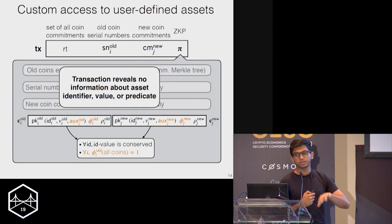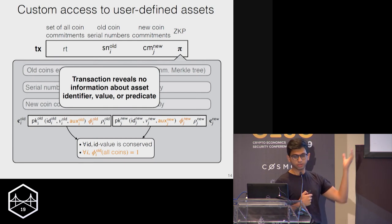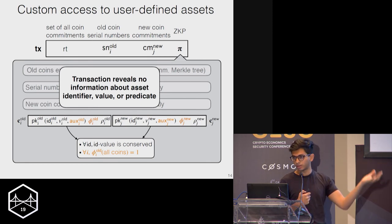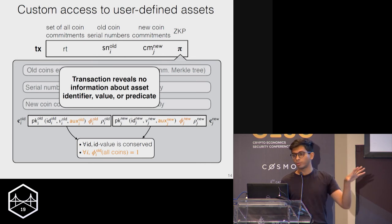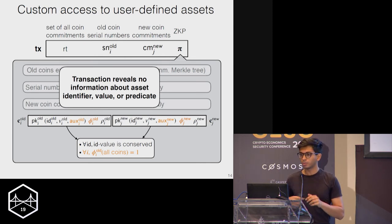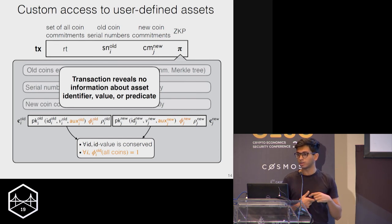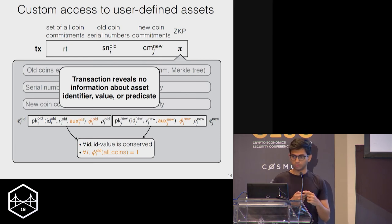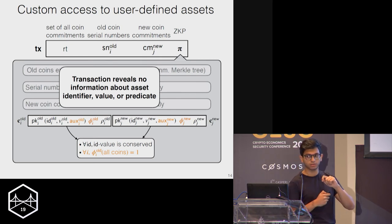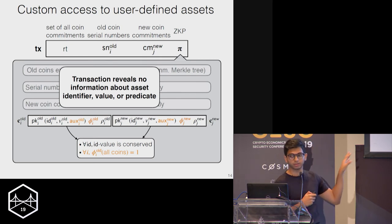How we got around the technical challenge of arbitrary predicates is by using a step of proof recursion — instead of checking the predicate itself inside the main proof, we check a proof that the predicate is satisfied. This means the global parameters just need to check that a proof of a particular shape is satisfied, rather than one set of parameters for every predicate.